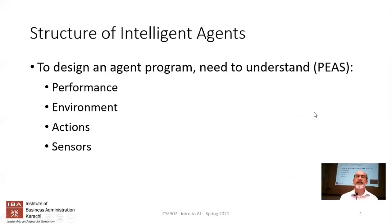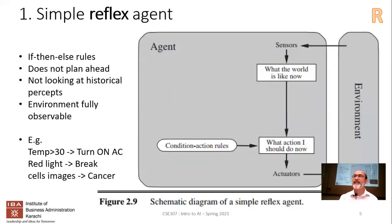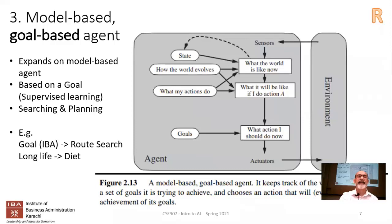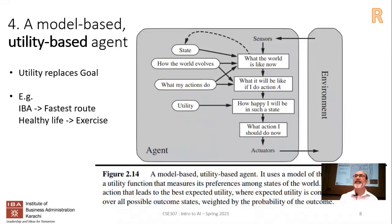We spoke about the structure of intelligent agents. I noticed in my slide last time there was a small typo — for P it said 'percepts' when it should have been 'performance.' We spoke about the four types of agents: starting from the simple reflex agent, to the model-based agent, then the goal-based agent, and then the utility agent.